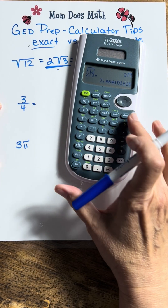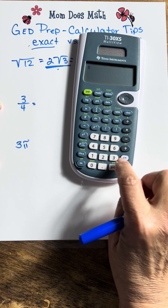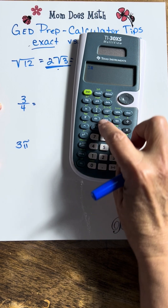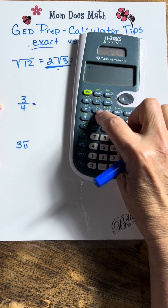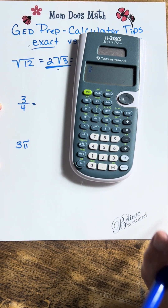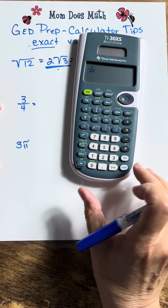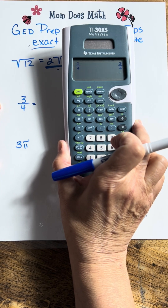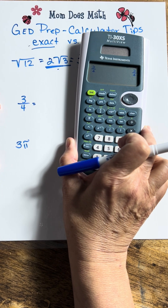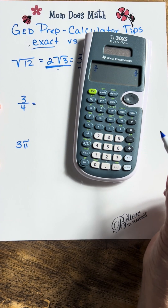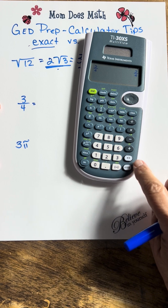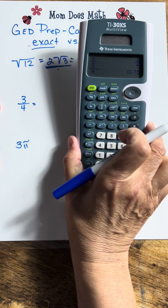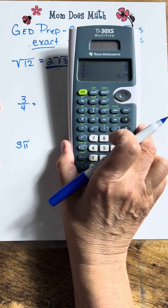Now let's look at what it does with a fraction. If I enter 3 fourths — the way you can do that is 3, hit the ND button, and then the 4. And then if you hit enter, it just keeps showing you 3 over 4. But what if you want that changed to a decimal? Same button. Hit that button, and now you see you have .75.